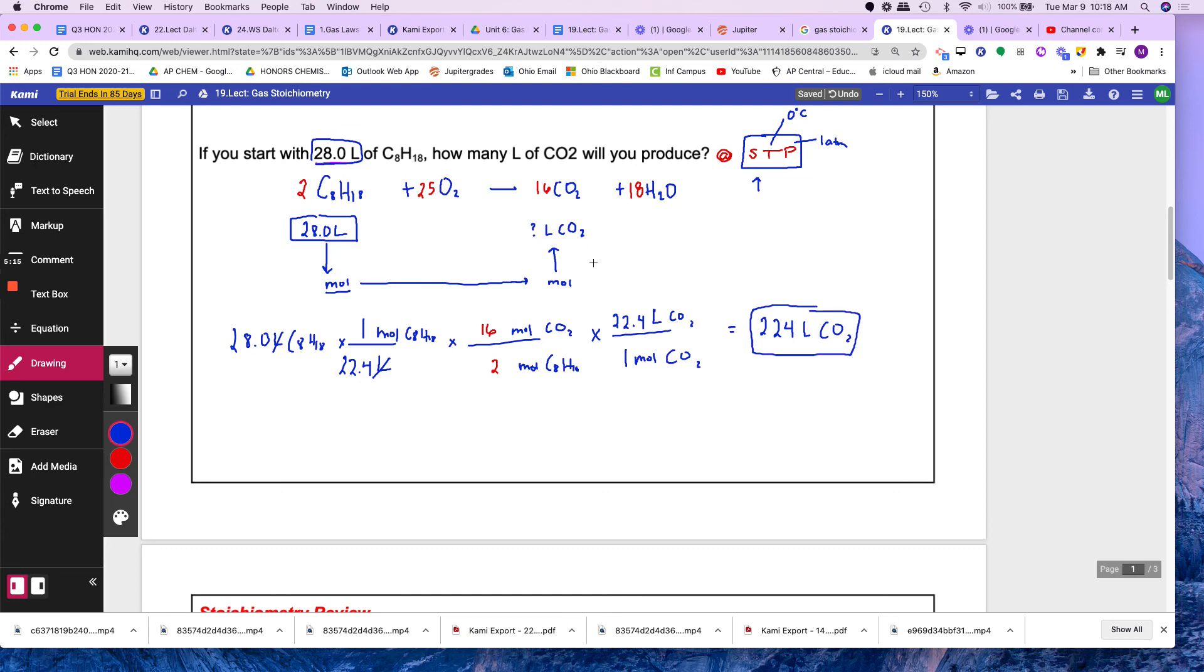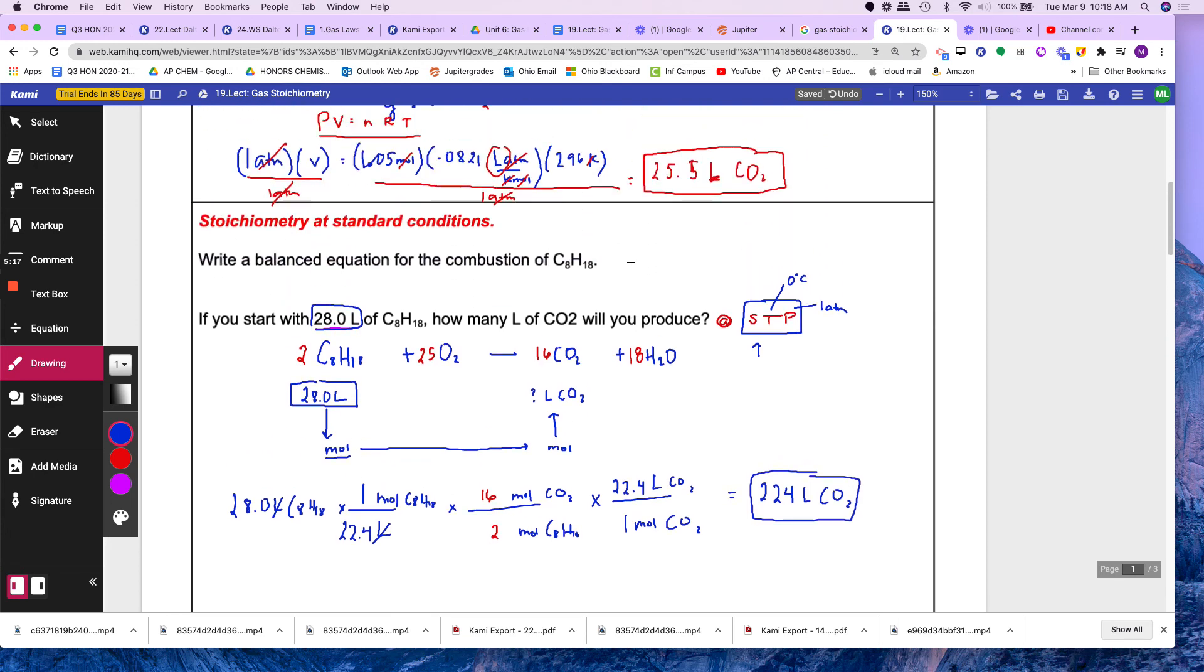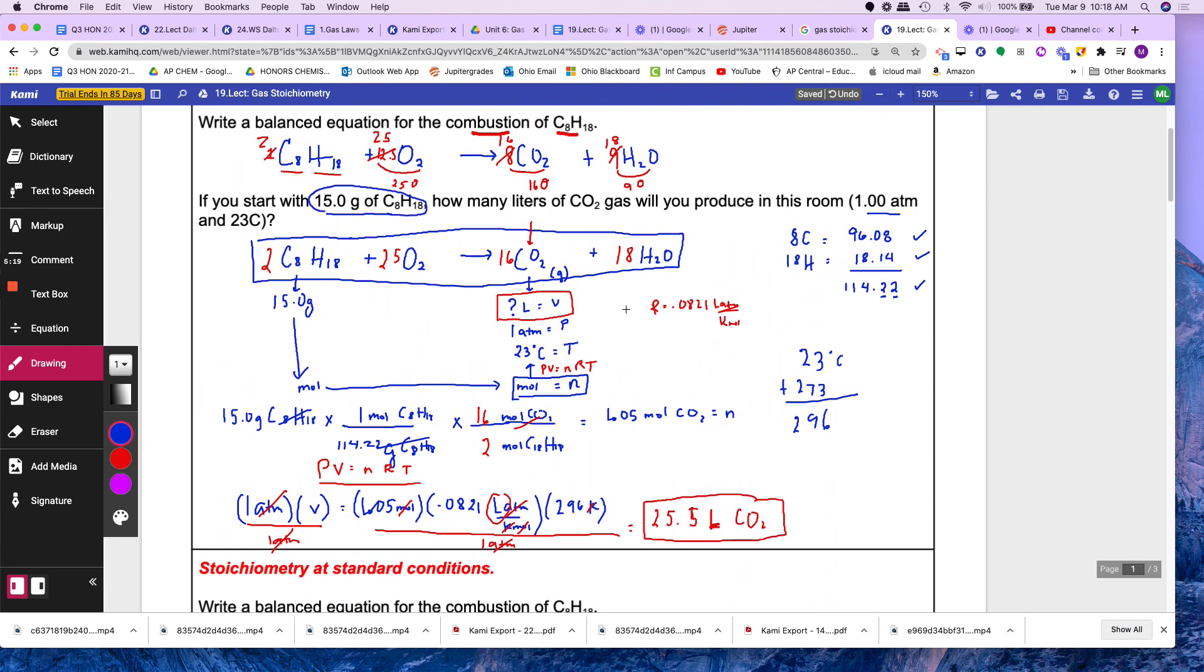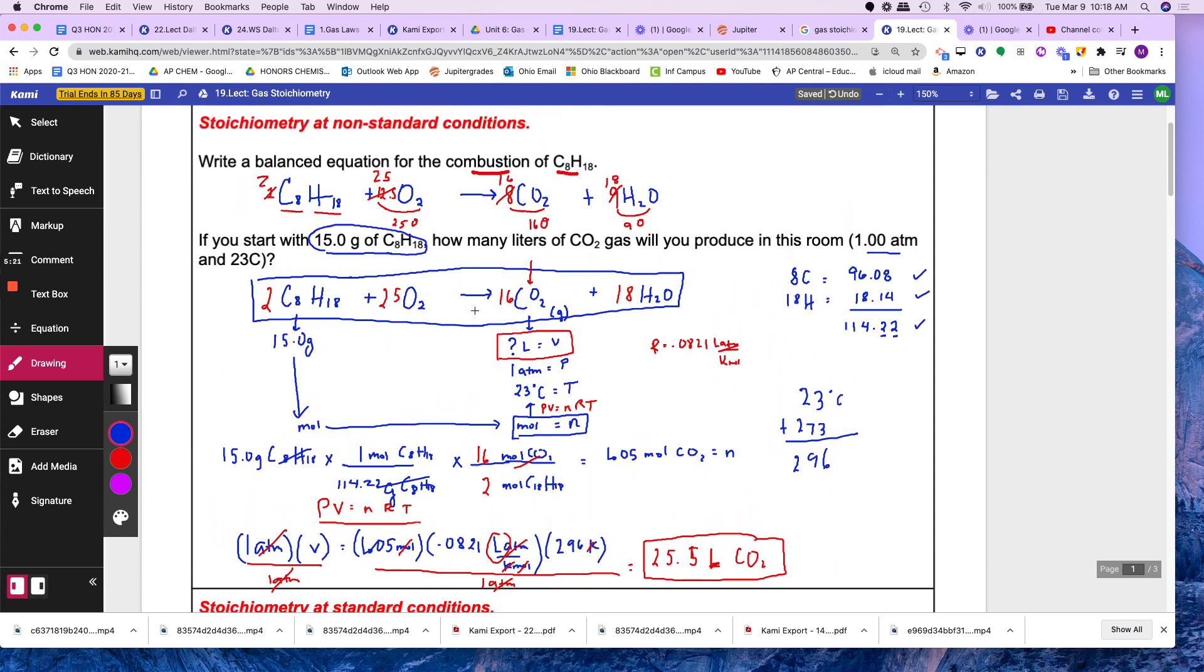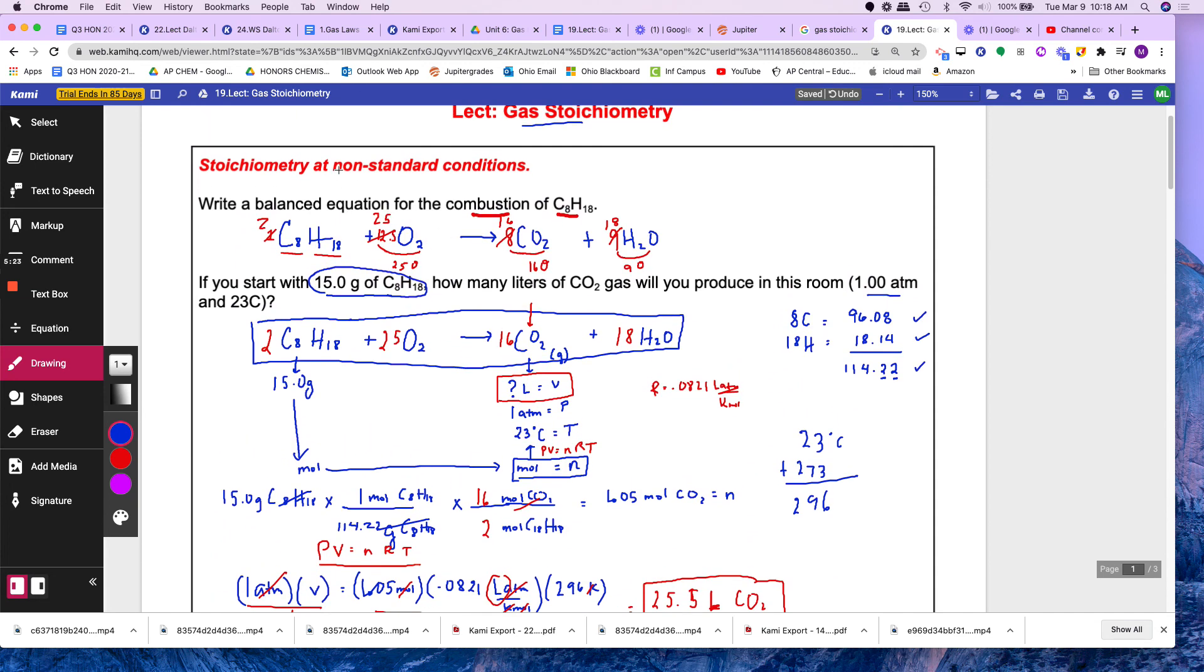Now if you're not at STP, you have to plug it into PV equals NRT like we did in the other problem. So, just to summarize, we have done two types of problems. The first type is you're not at STP.